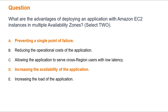Option C: The best way to serve users with low latency across regions is to launch another EC2 instance in a region that is closer to the user's location, not by deploying in multiple availability zones within a single region. Option E: Deploying instances in multiple availability zones will not change the overall load of your application. The main benefit is the increased availability and resilience, not the application's performance or load handling capabilities.